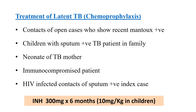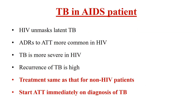Treatment of latent tuberculosis or chemoprophylaxis includes contacts of open cases who recently became Mantoux test positive — Mantoux test is a screening test for TB diagnosis — children with a sputum-positive TB patient in the family, neonates of tuberculosis mothers, immunocompromised patients, and HIV-infected contacts of sputum-positive index cases. All these should receive isoniazid 300 mg for six months, that is 10 mg per kg in children.